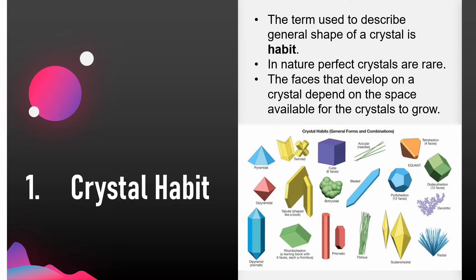For example, acicular refers to a crystal habit composed of slender needle-like crystals. Botryoidal mineral has a globular external form or ball-like clusters resembling a bunch of grapes. Bladed is blade-like, slender and flattened. Dendritic is tree-like branching in one or more directions from a central point.